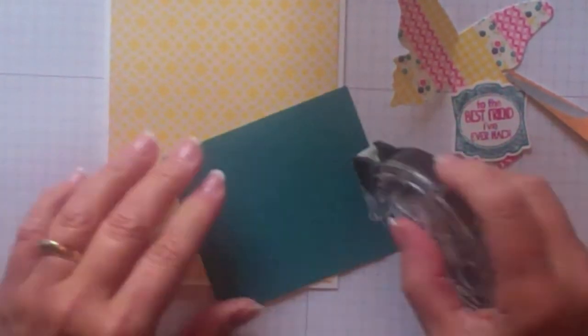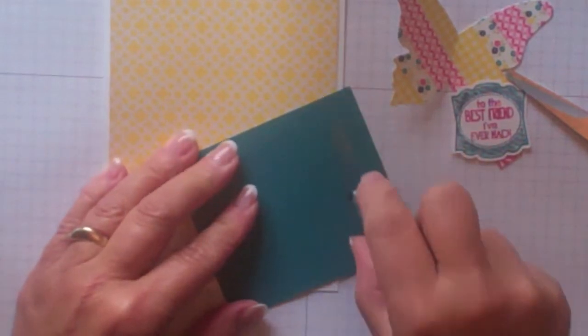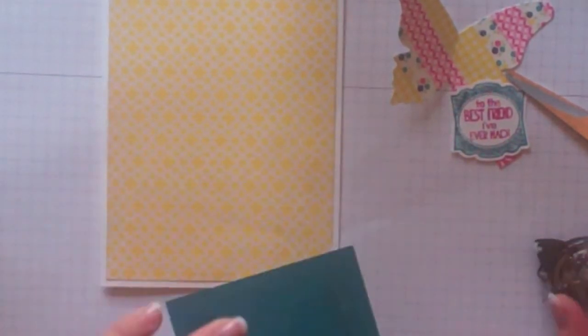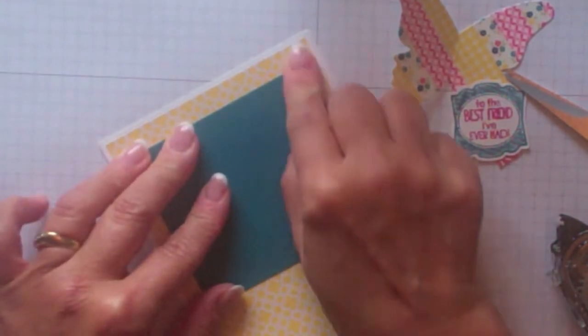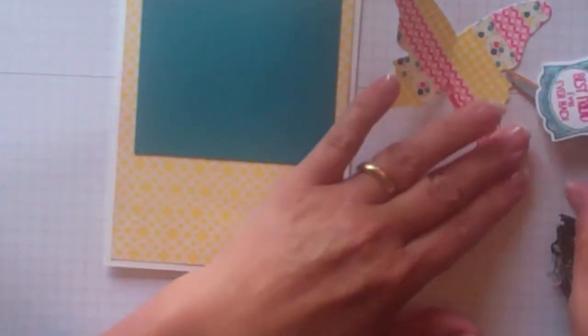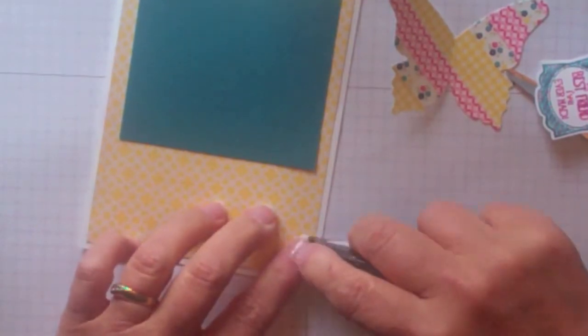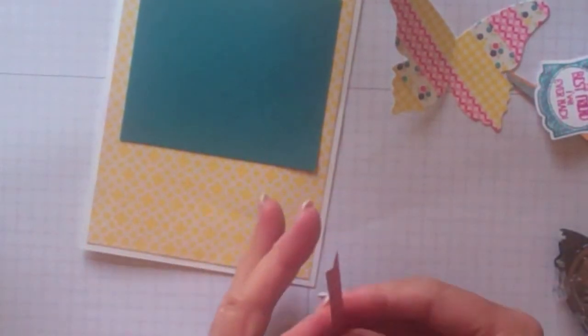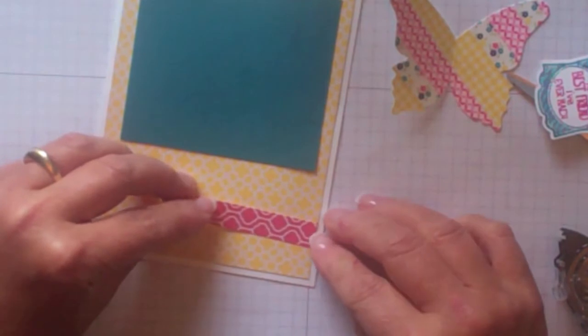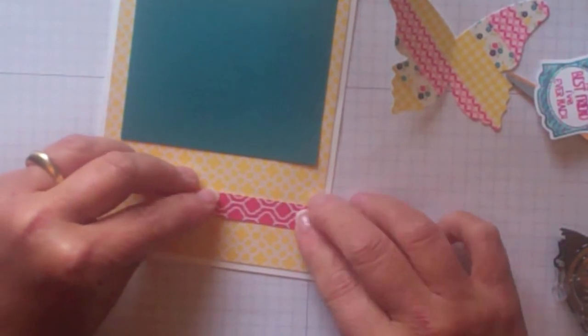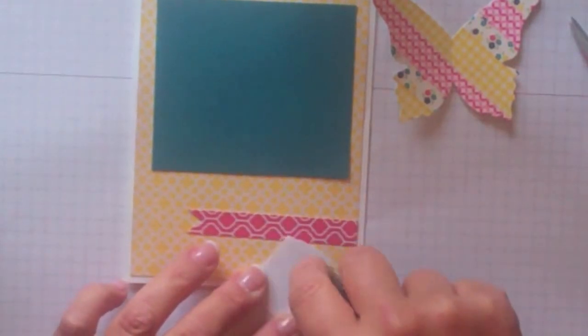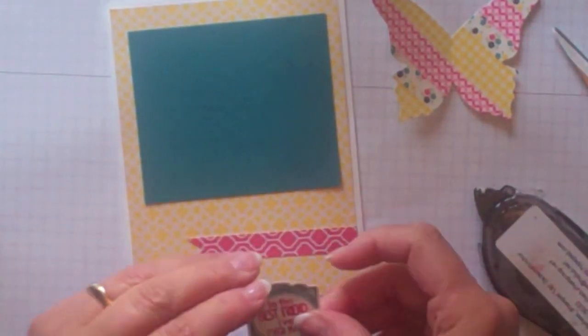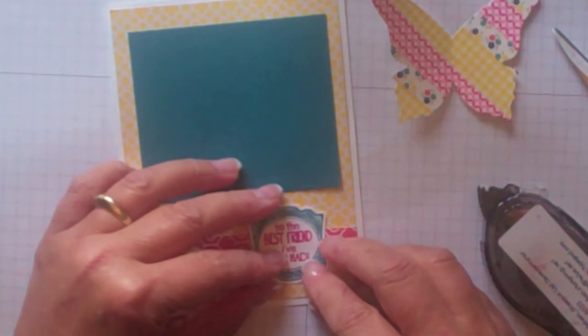And then I've got a piece of island indigo and I'm just going to place that in the center. Then we've got our little banner. I'm just going to place it down here.